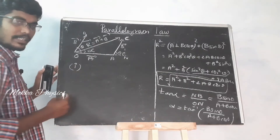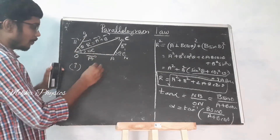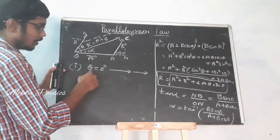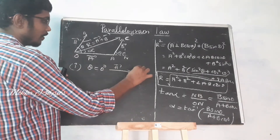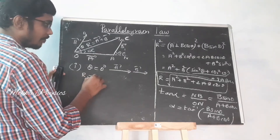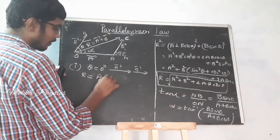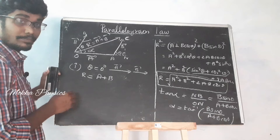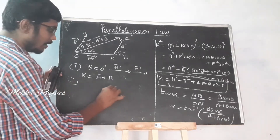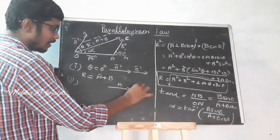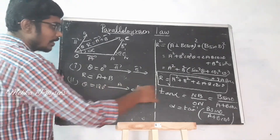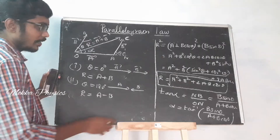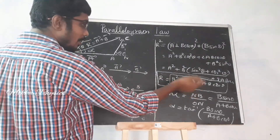Case number one: the two vectors are in one line, theta = 0. Since cos 0 = 1, then R² = A² + B² + 2AB = (A + B)², so the resultant becomes R = A + B. Second case: the two vectors are opposite, theta = 180. Since cos 180 = −1, then R = A − B.